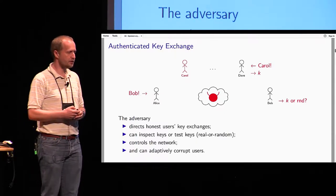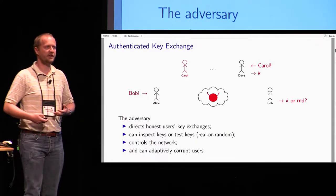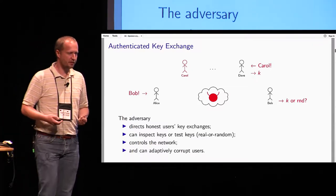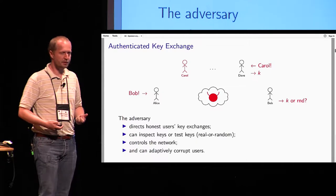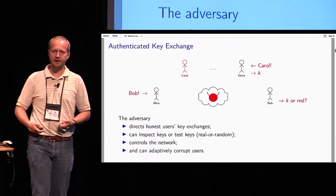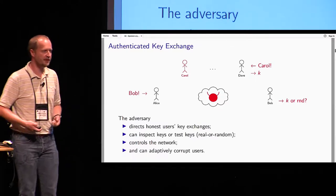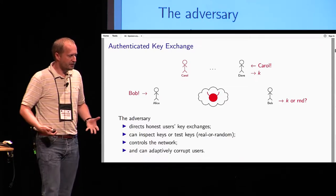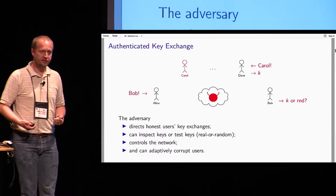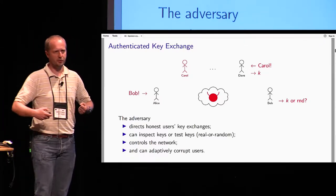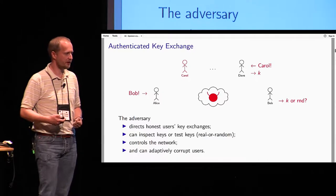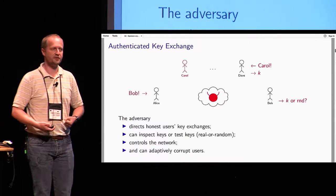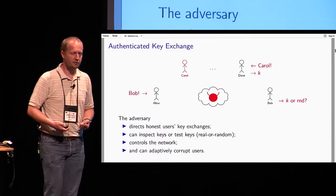Let's remind ourselves what the properties of key exchange are and what the adversary is allowed to do. The adversary directs everyone, because we're trying to give him as much power as possible — everything that could conceivably give him an advantage, without making trivial queries. He directs every honest user, can inspect keys, can test keys (the real-or-random query), controls the network, and can also adaptively corrupt users, and that last capability is what really causes trouble for us.